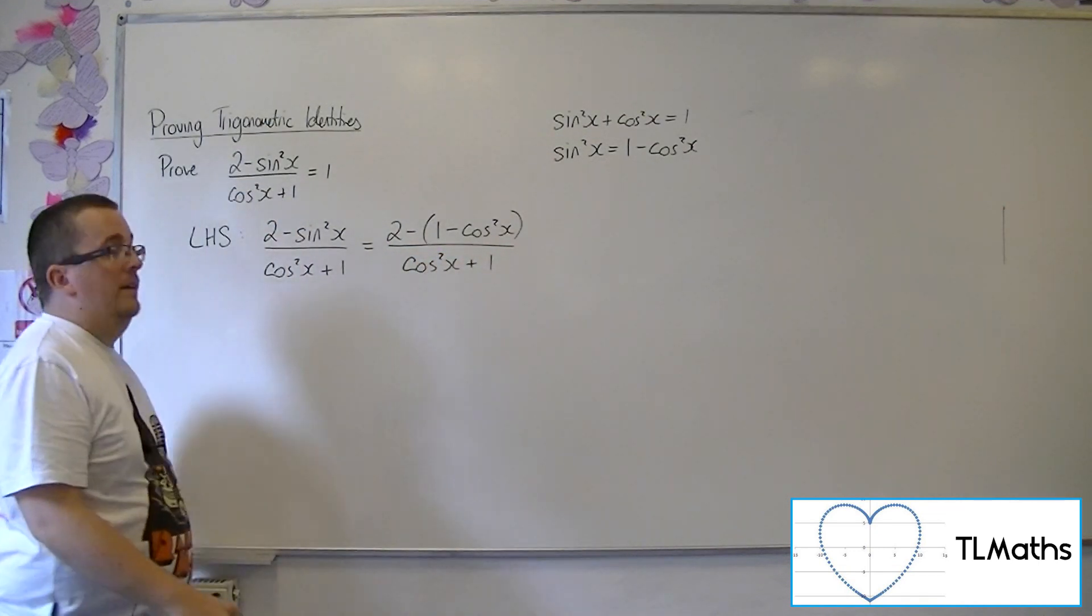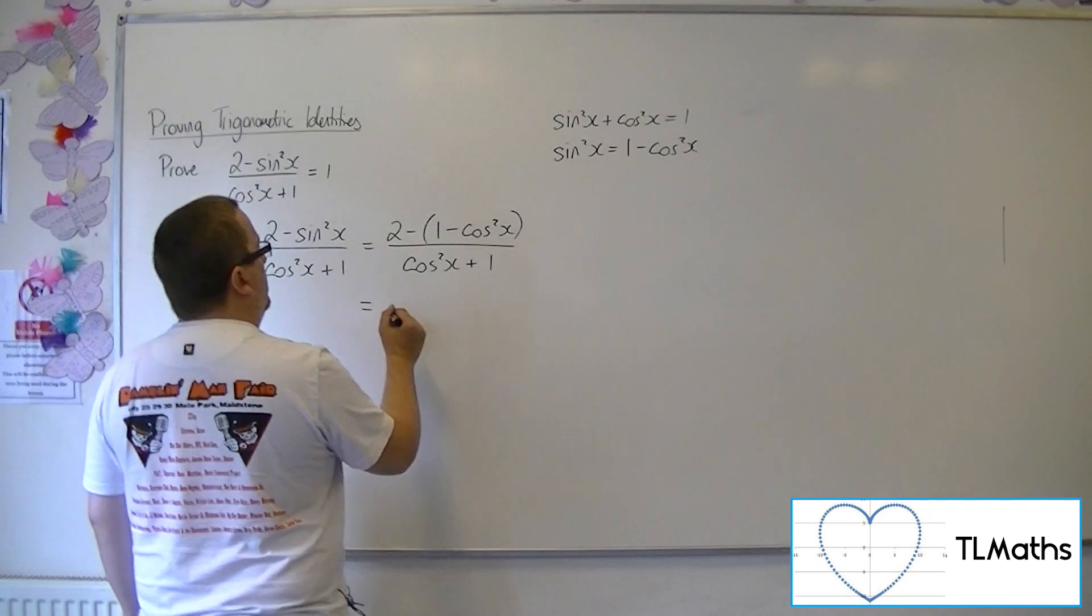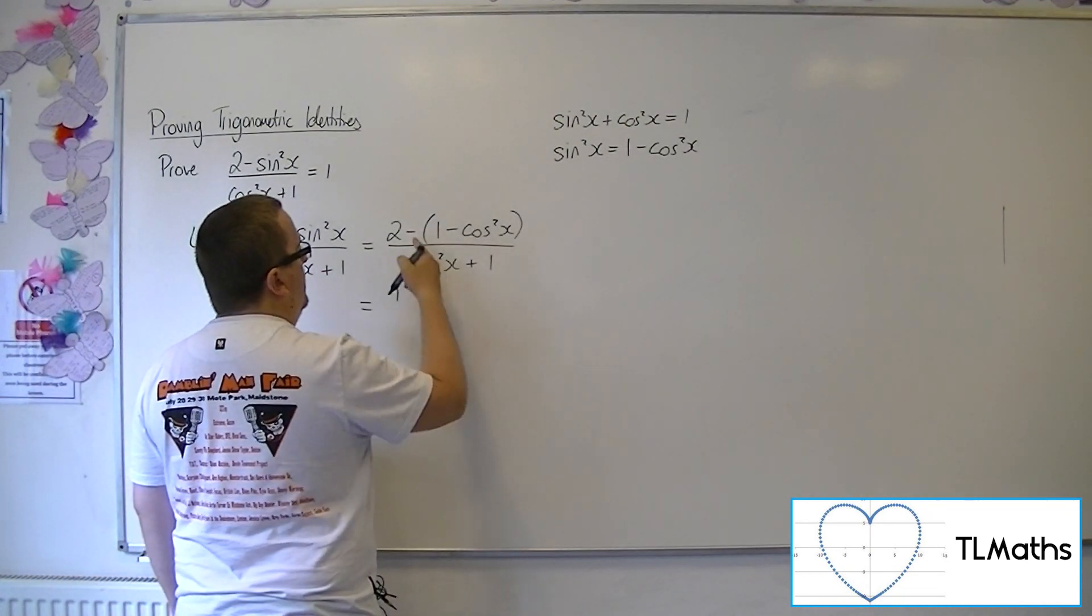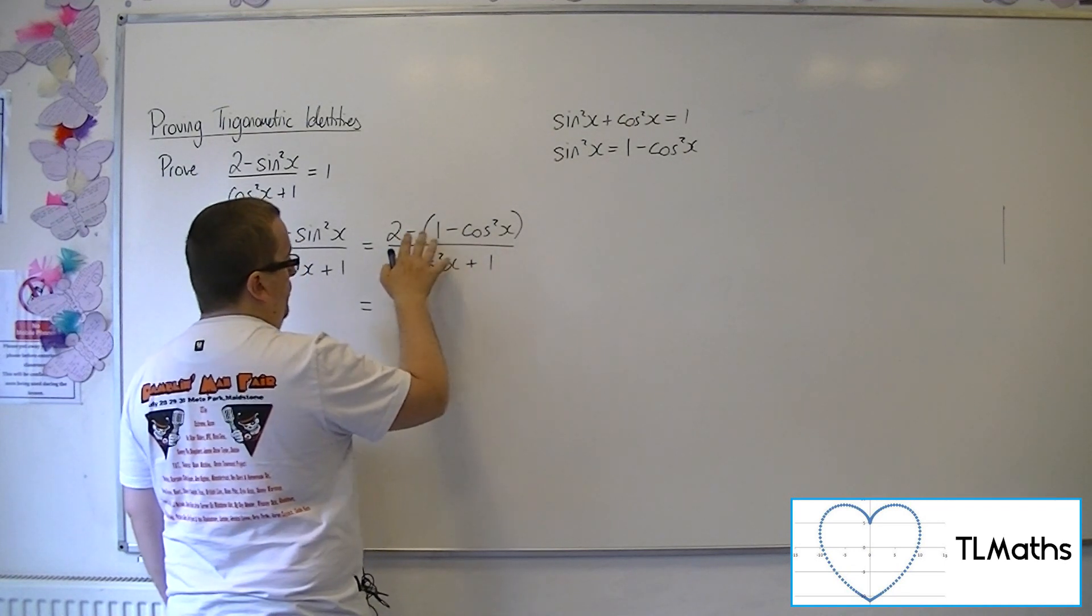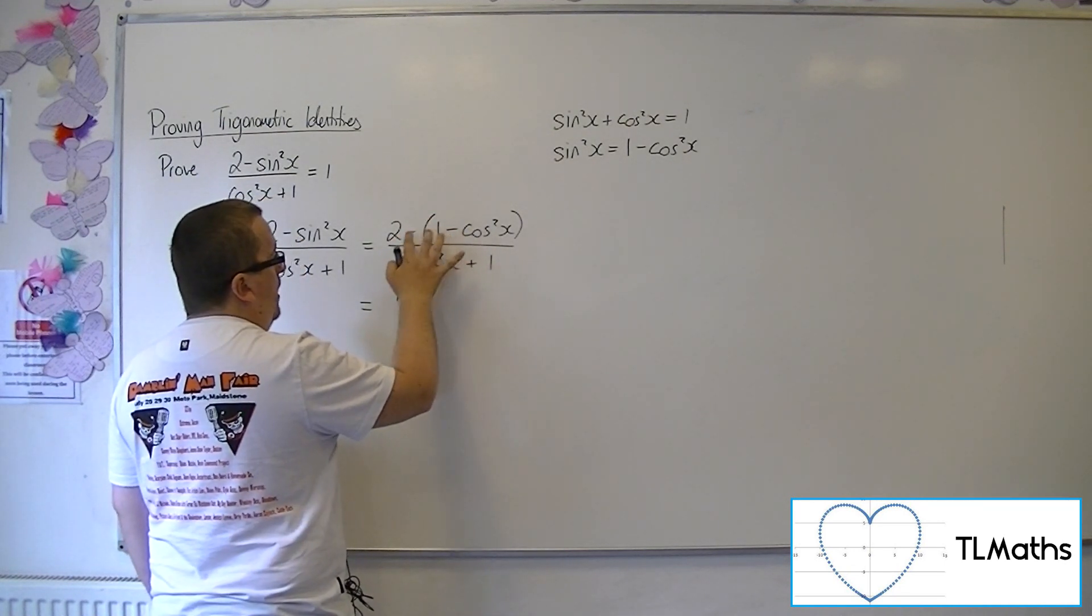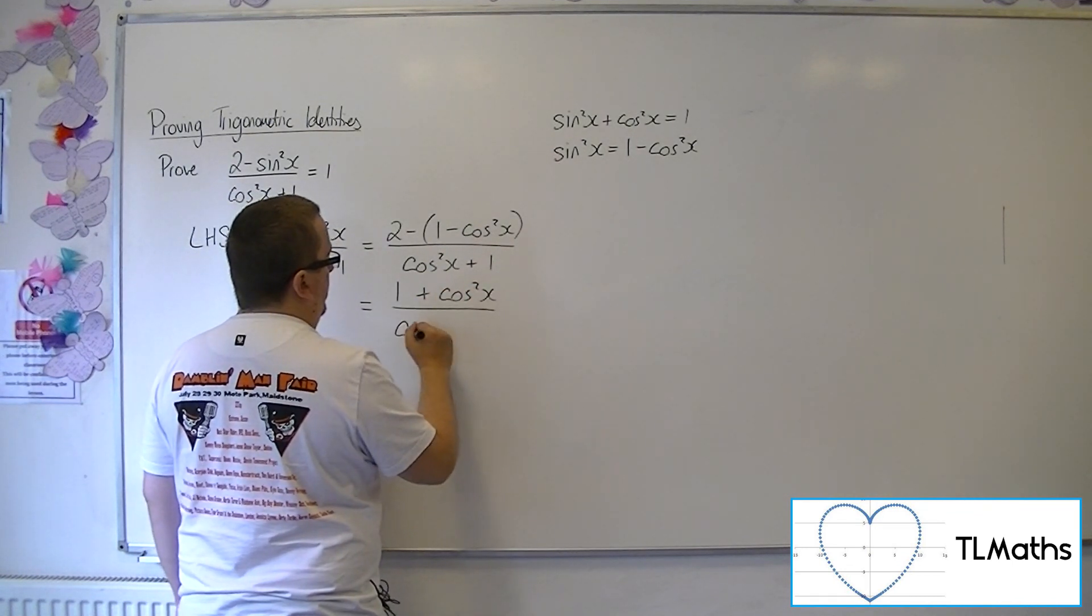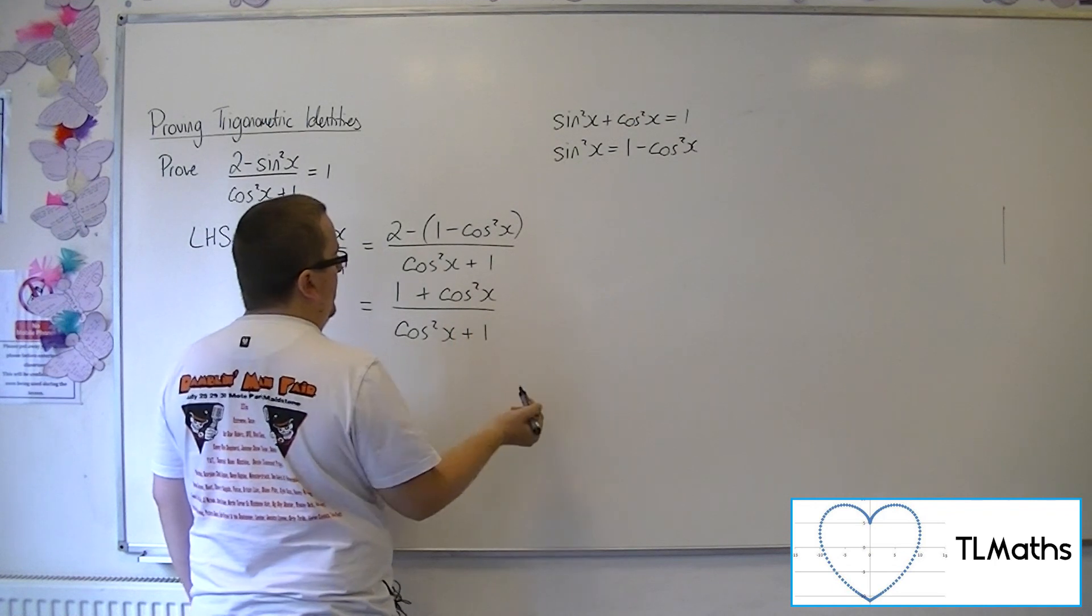Let's see what happens. Well, the numerator becomes 2 take away 1. So 1, 2 take away, or sorry, the take away a minus here. So plus cos squared, so that's the numerator, and I've got cos squared plus 1 in the denominator.